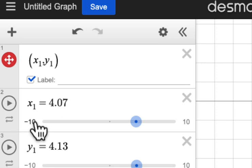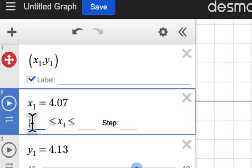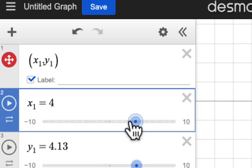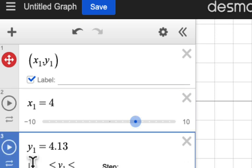Change the sliders so that they show integer steps for the coordinates. Click on the number and then on step, click one and press enter. Repeat with the other slider.